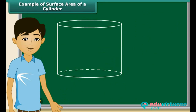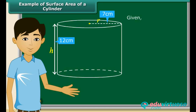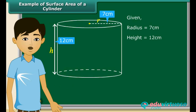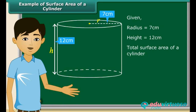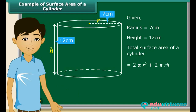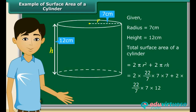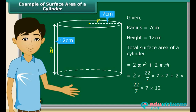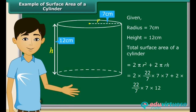Let us find the surface area of this cylinder. It is given that the cylinder has radius equal to 7 cm and height equal to 12 cm. The formula for total surface area of a cylinder is 2 pi R square plus 2 pi R H. Substituting: 2 into 22/7 into 7 into 7 plus 2 into 22/7 into 7 into 12. This gives a surface area of 836 cm square.